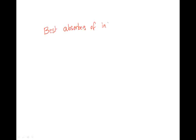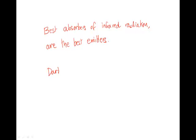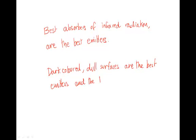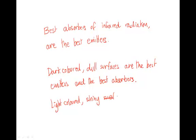The best absorbers of infrared radiation are also the best emitters of infrared radiation. Dark coloured, dull surfaces are the best emitters and also the best absorbers of infrared radiation. Light coloured, shiny surfaces are the worst emitters and they are the worst absorbers.